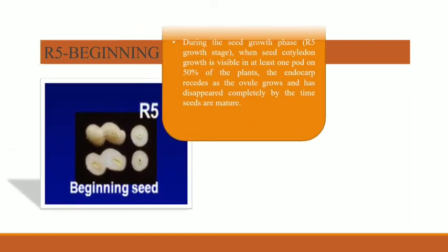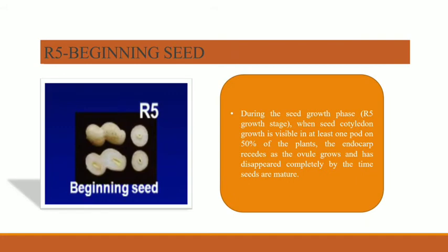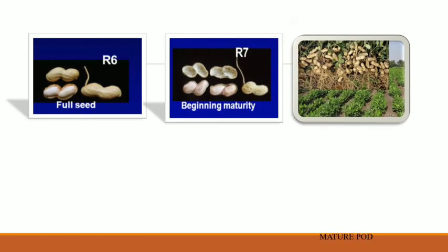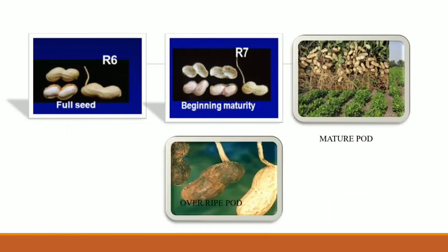The beginning seed stage, R5, occurs when seed cotyledon growth is visible in at least one pod on 50% of the plants. The endocarp recedes as the ovule grows and disappears completely by the time seeds are matured. Images show the full seed, beginning maturity, matured pod, and over-ripe pod — these are the growth stages of the groundnut discussed in detail.